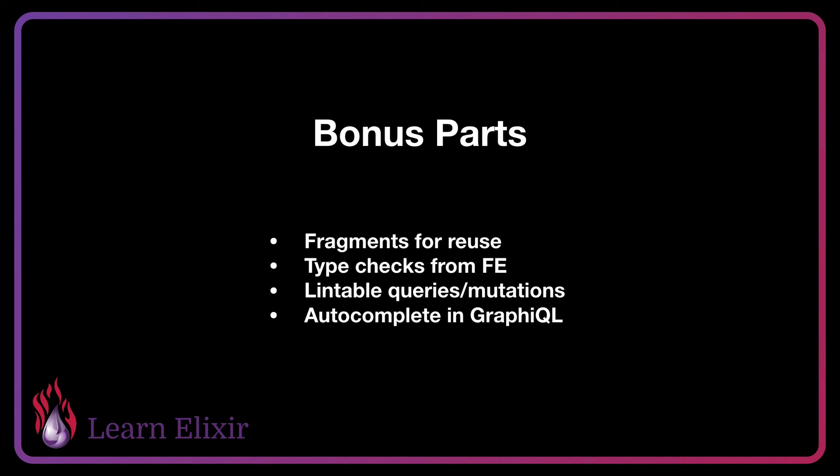In short, GraphQL really helps to alleviate some of the problems we see in REST and can help us create better applications where the frontend is in more control of how they specify and interact with the data. Because our mutations are simple and named, instead of forcing CRUD and REST together, we can specify individual mutations with names that don't necessarily match — for example, we could say sendEmail as a mutation that sends an email. Now that we know a bit about the differences between GraphQL and REST, in the next video we're going to go over creating a GraphQL API with Phoenix. I'll see you in the next video.